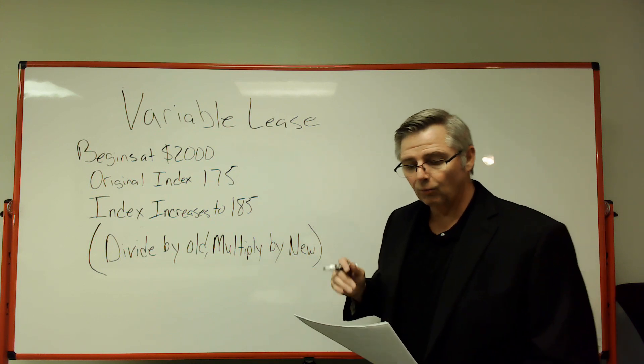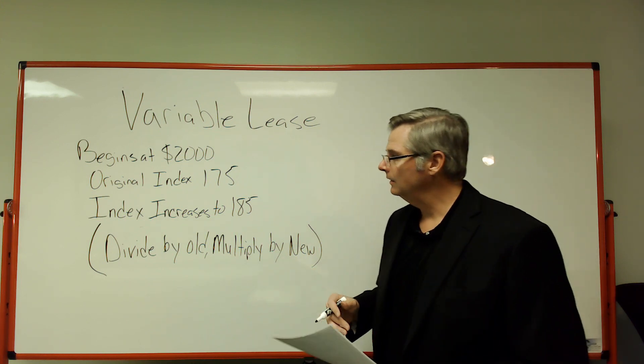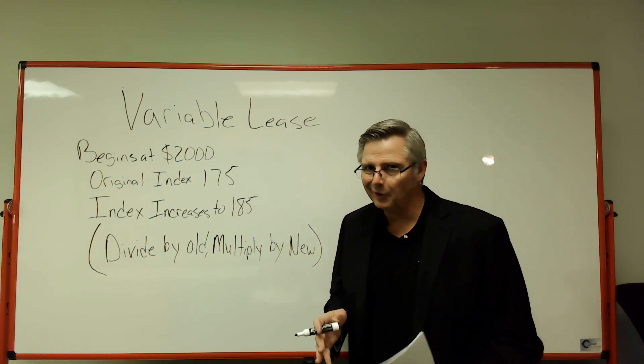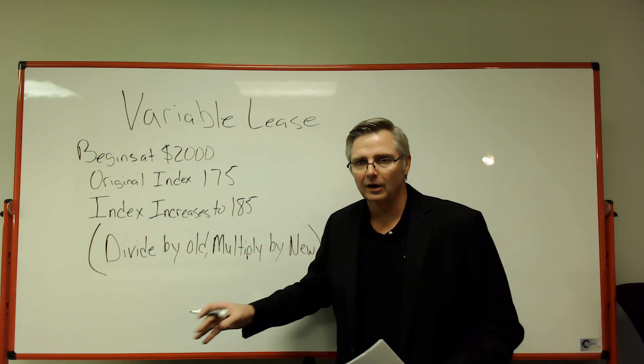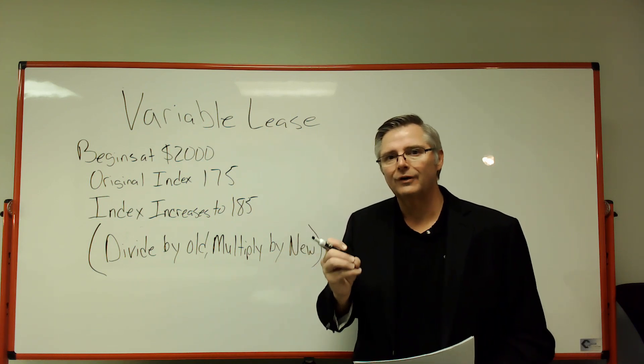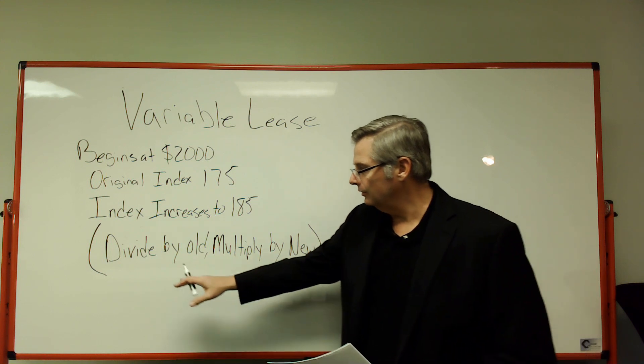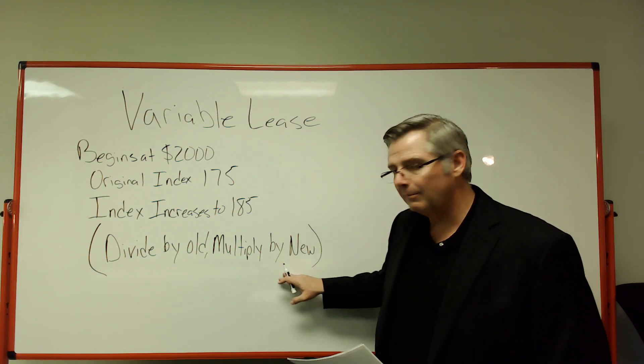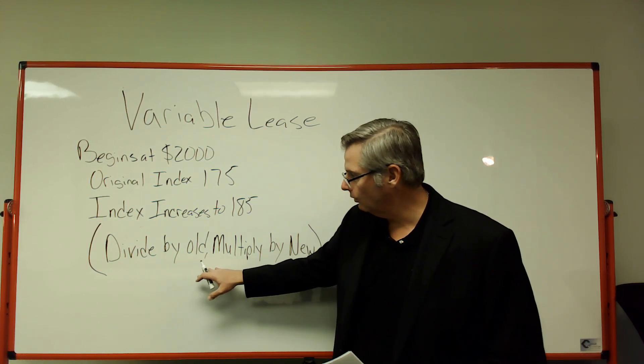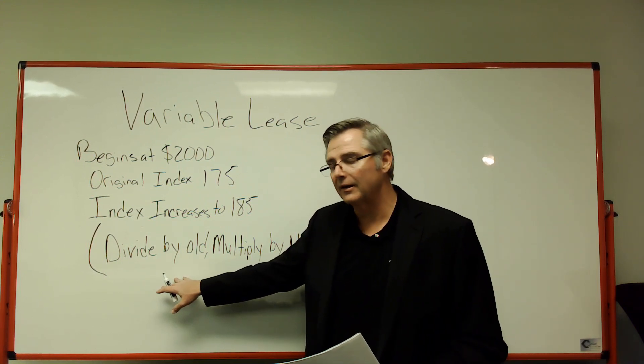This is really not too hard. I have a nice little way to remember how to do variable leases, and that is: divide by the old, multiply by the new. Divide by the old, multiply by the new. What I mean by that is you divide by the old index and multiply by the new index.